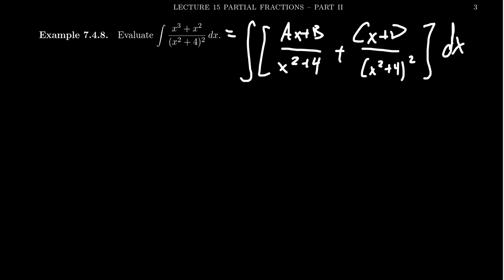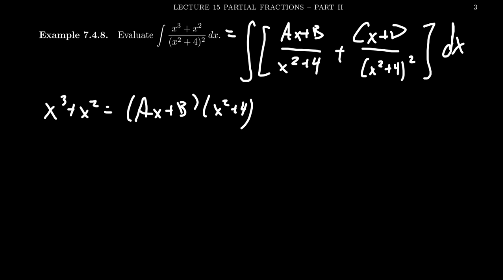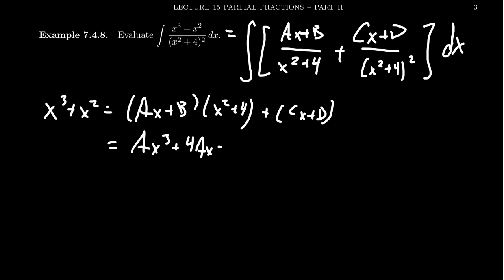If we clear the denominators, we're going to get x cubed plus x squared equal to (ax + b)(x² + 4) plus (cx + d). I would recommend just foiling these things out and trying the systems of equations. So we're going to get ax³ + 4ax + bx² + 4b + cx + d.